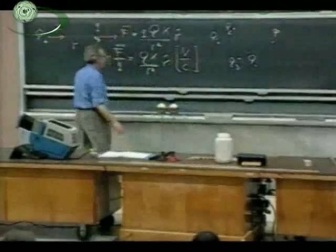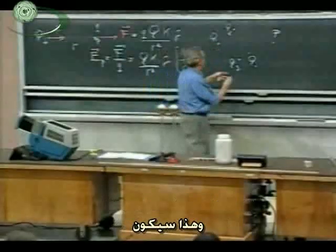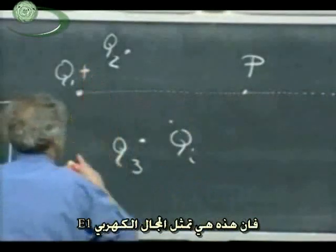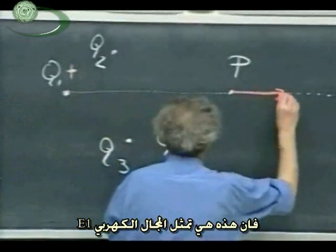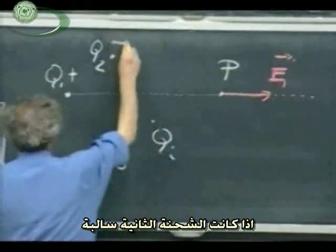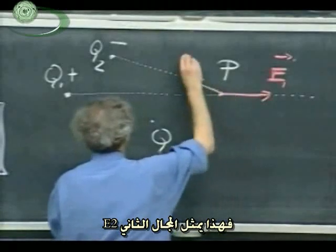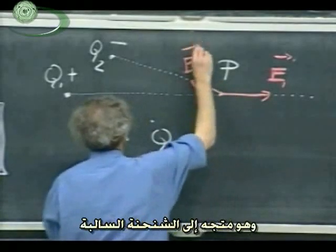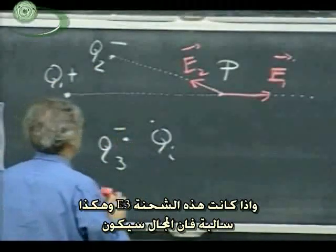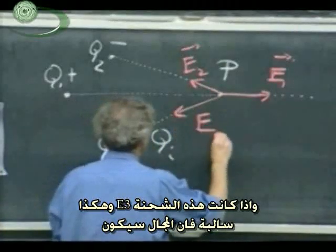So now I can say, what is the E-field due to Q1 alone? Well, that would be, if Q1 were positive, then this might be a representation for E1. If Q2 were negative, this might be a representation for E2 pointing towards the negative charge. And if this one were negative, then I would have here a contribution E3 and so on.